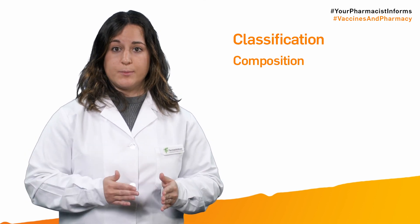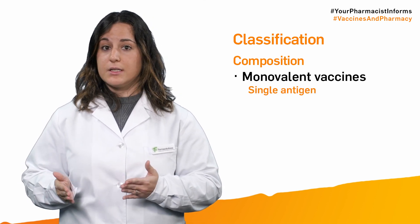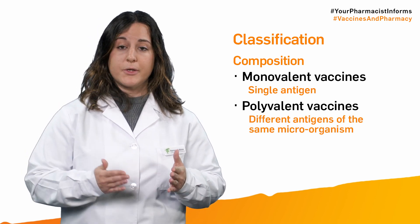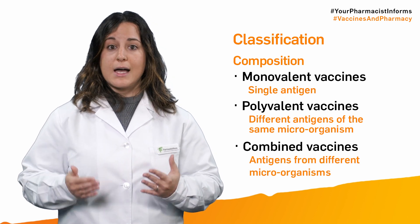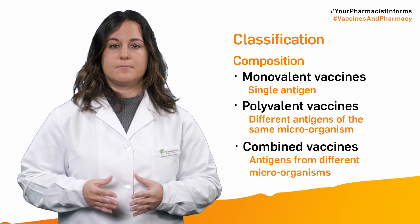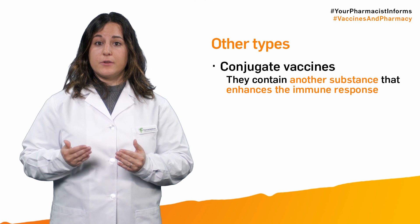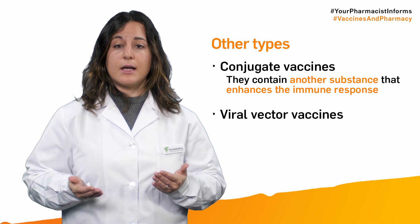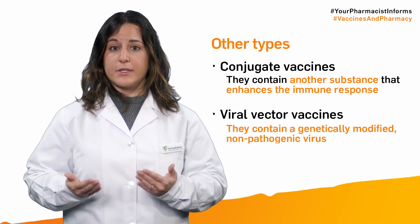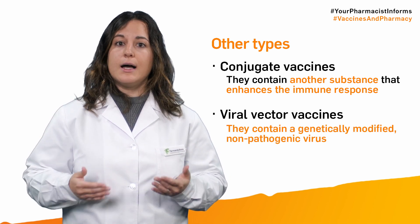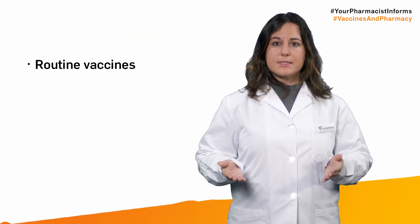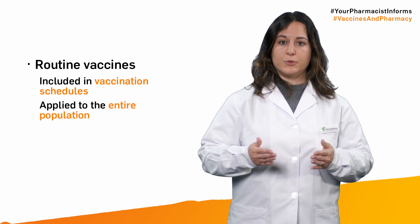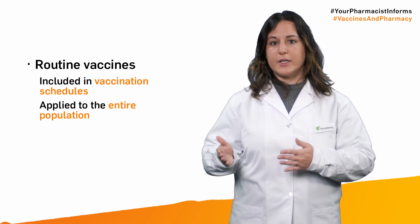We can differentiate between monovalent vaccines, which present a single antigen; polyvalent vaccines, which contain different antigens of the same microorganism; or combined vaccines, which contain antigens from different microorganisms. Conjugate vaccines contain another substance that enhances the immune response. Viral vector vaccines contain a genetically modified non-pathogenic virus — the viral vector — and parts of the microorganism.